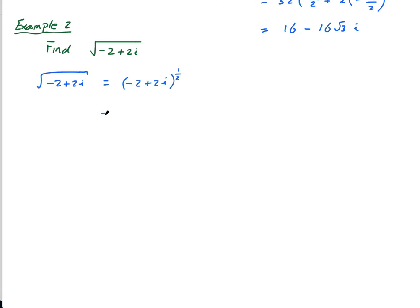And this equals, we're going to write this in modulus argument form. So minus 2 plus 2i is actually up here. This is 2, this is 2. So this is going to be the square root of this squared plus this squared, root 8. This is going to be alpha, this is going to be theta.